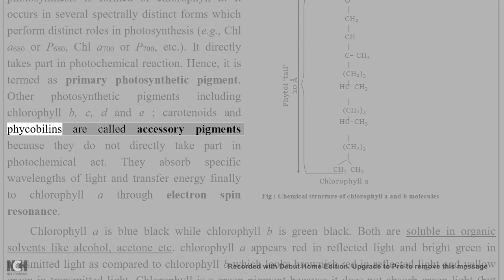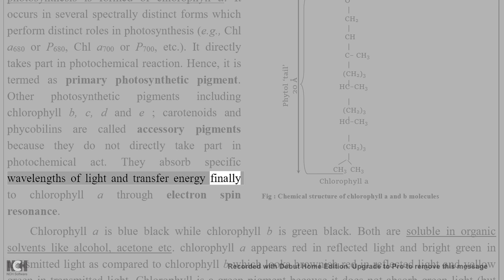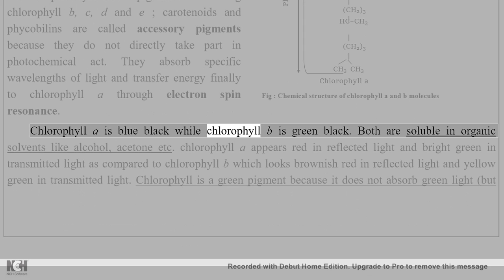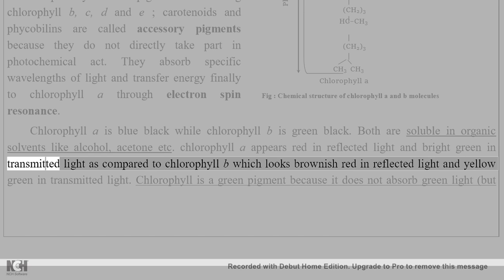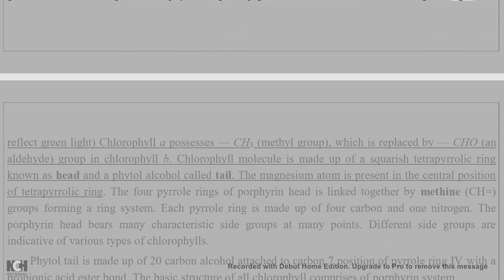Other photosynthetic pigments including chlorophyll b, c, d, and e, carotenoids, and phycobilins are called accessory pigments because they do not directly take part in the photochemical act. They absorb specific wavelengths of light and transfer energy finally to chlorophyll a through electron spin resonance. Chlorophyll a is blue-black while chlorophyll b is green-black. Both are soluble in organic solvents like alcohol and acetone. Chlorophyll a appears red in reflected light and bright green in transmitted light, compared to chlorophyll b which looks brownish-red in reflected light and yellow-green in transmitted light.